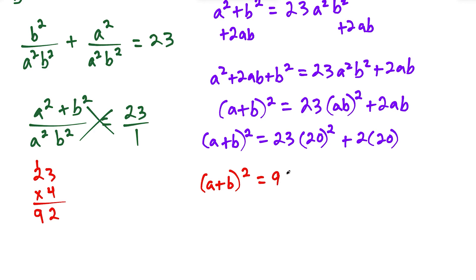So this would work out to 9200, because when I do times 400, I would just put two zeros here and two zeros here. And then we have plus two times 20 is 40. So now we could write our final answer: a plus b squared is equal to 9240.